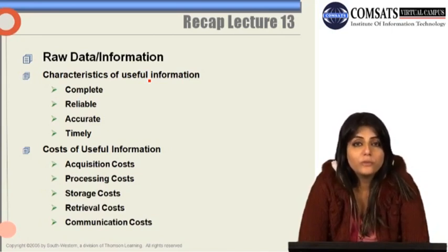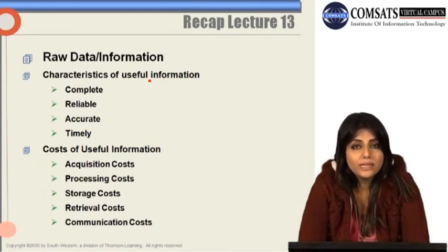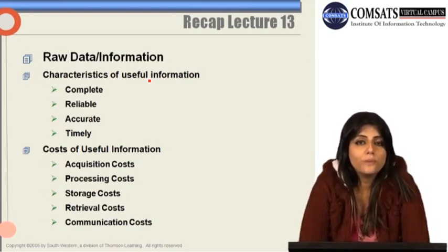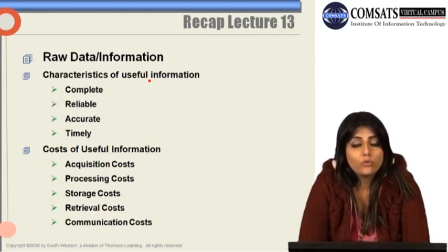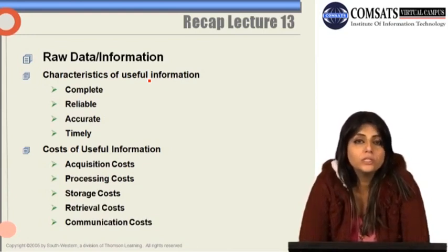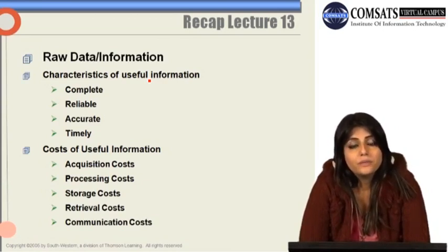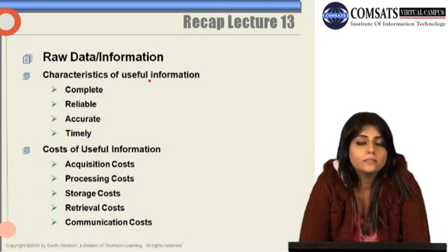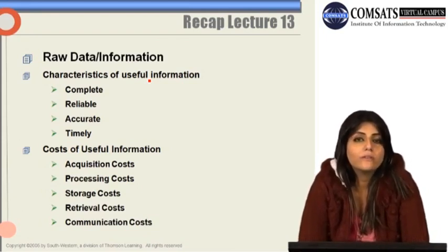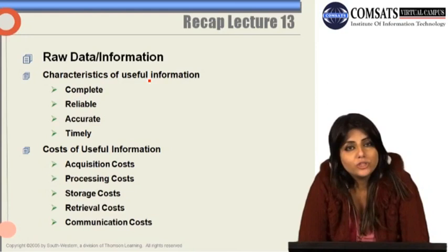Another criterion of useful information is accuracy. If the information is not accurate, then the decisions the manager makes will be faulty and more prone to mistakes. Timely information is also useful information. If we do not receive the information on time, the decisions made will be faulty and prone to more mistakes. If we are receiving information after deadlines have passed or after decisions are already made, then that information is not useful.